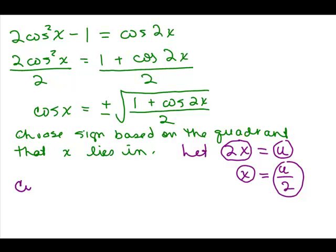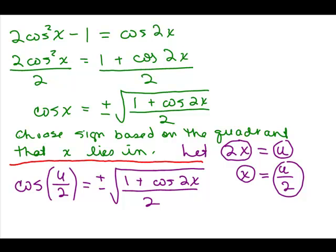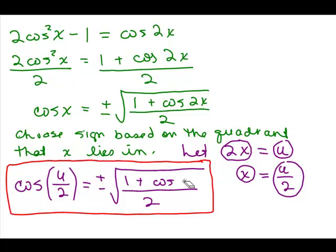This formula now becomes the cosine of U over 2 — you can think of that as a half angle — is equal to plus or minus the square root of 1 plus the cosine of U all over 2. That is the half angle identity for cosine.